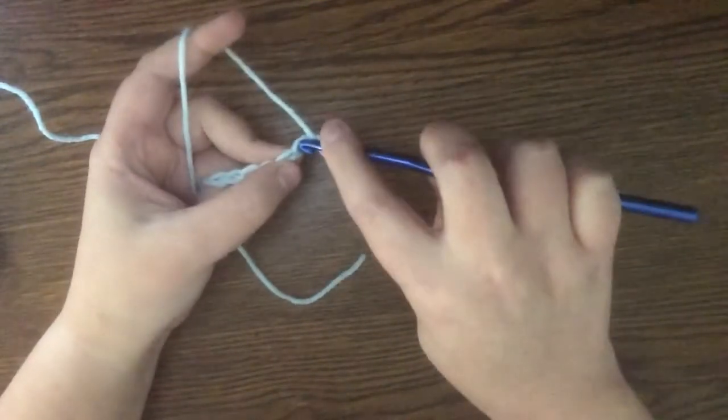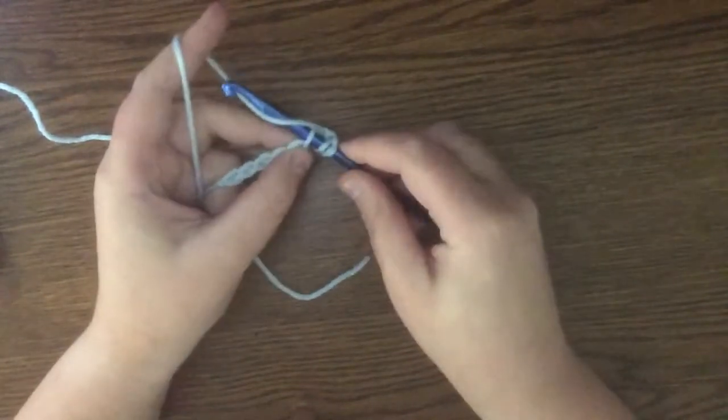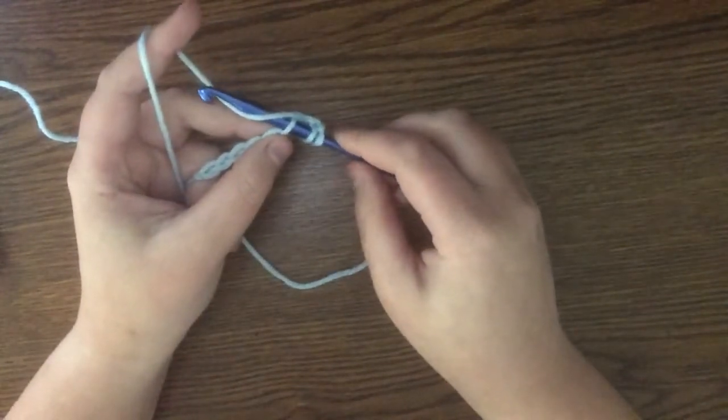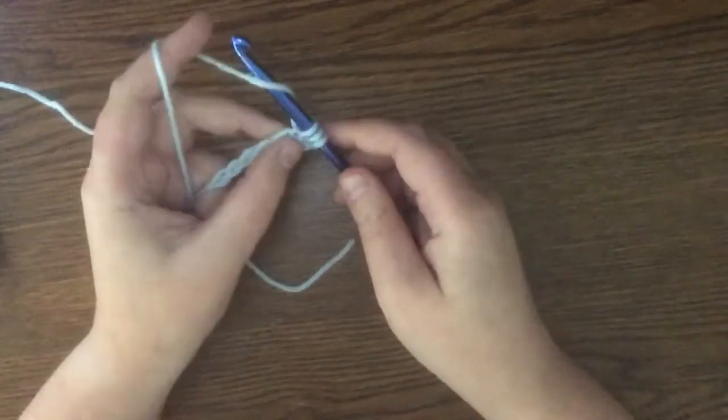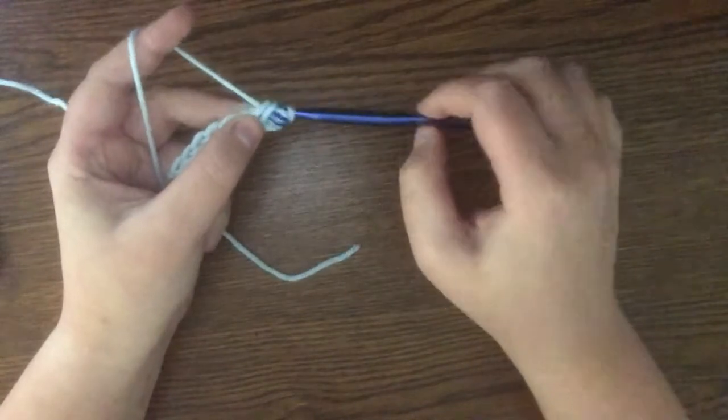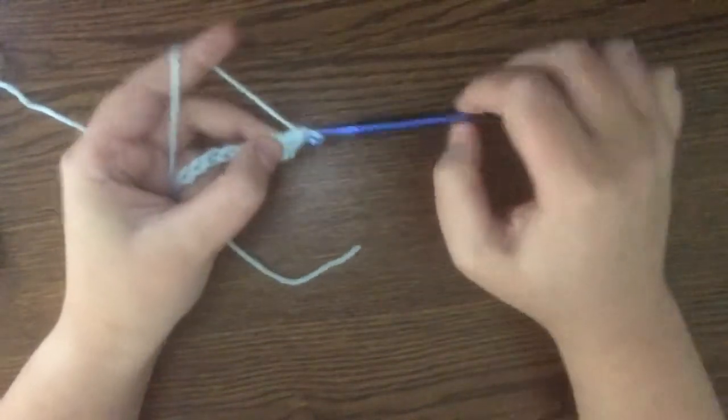So insert your hook into the third chain from the hook, yarn over, and now you're going to pull through one loop, and then you're going to pull through two loops, and then you're going to pull through two loops.